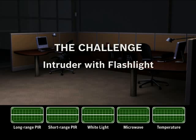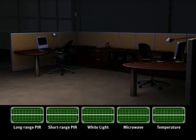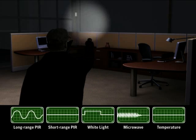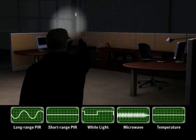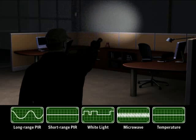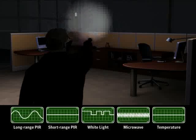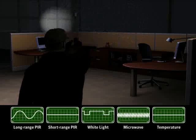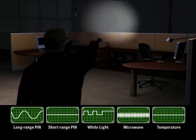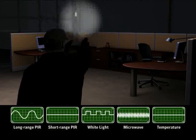But what happens when an intruder tries to trick the detector by using a flashlight to mimic car headlights? The long range PIR senses heat at a distance. The short range PIR does not sense heat. And the white light sensor detects the flashlight sweeps. The microwave sensor detects movement.